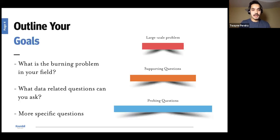So the next step to create your graphics are going to be outlining your goals. So essentially, you want to ask yourself, what is a burning problem in your field? Essentially, it's what your research paper is going to address. And then you're going to have a bunch of supporting questions for that burning problem. And then you'll have some probing questions, some data related probing questions. In a sense, we can sort of think of this as a visual essay, where you have your large scale problem, the supporting questions and the probing questions can all be graphics that answer this large scale problem and sort of tell this story, which is an easier way to sort of break it down and not overcomplicate it.